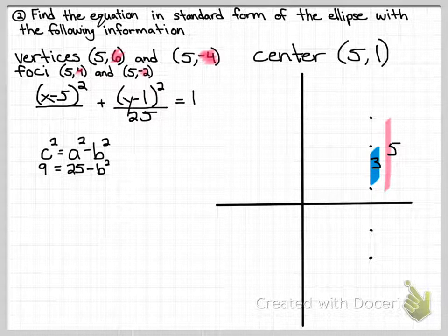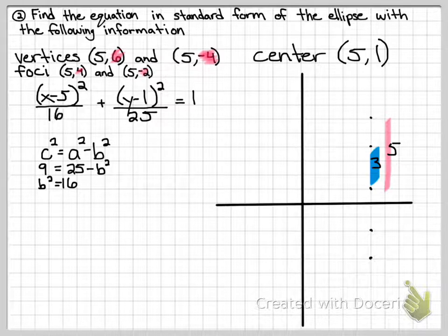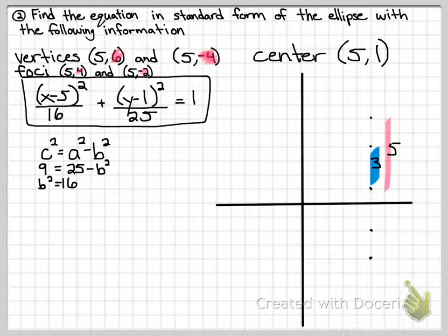Do a little math, solve for b squared. You should end up getting b squared equals 16. Notice I didn't square root it, because I'm trying to put it back into the equation, and in the equation, it's over b squared. I just leave it as 16. This is the standard form of the ellipse from the given information.